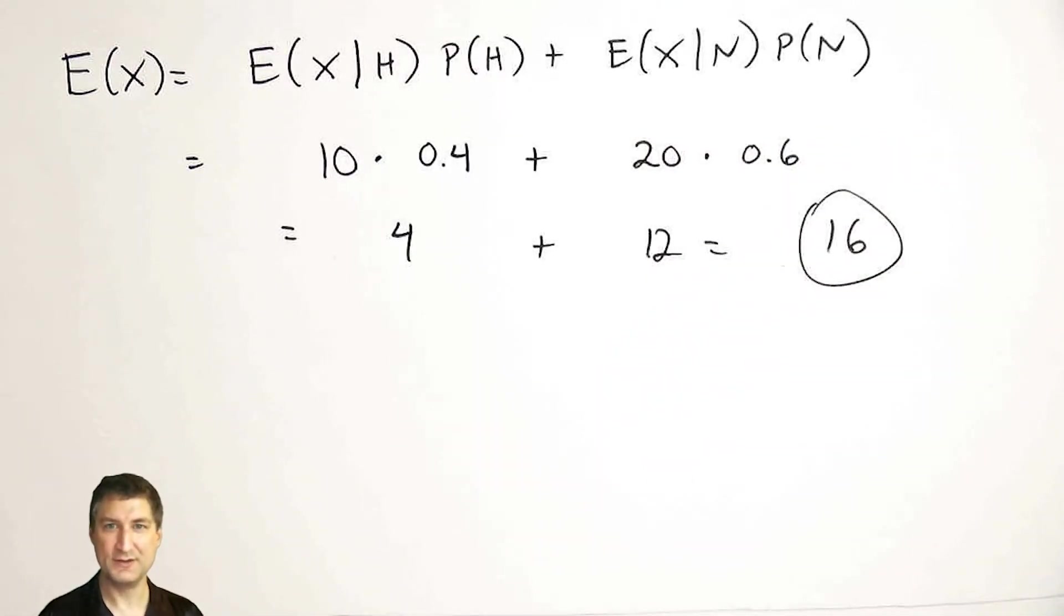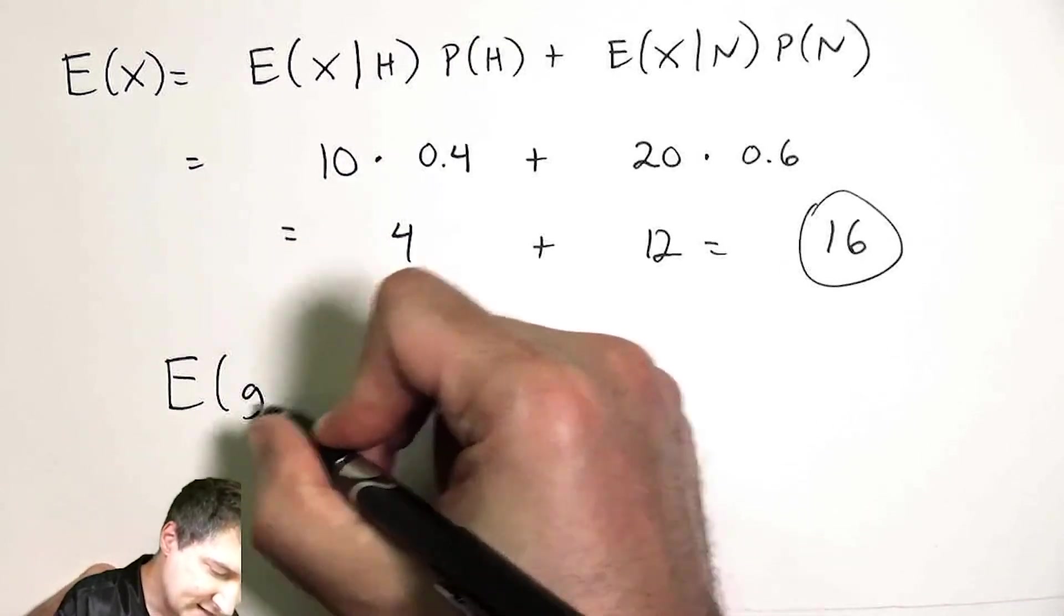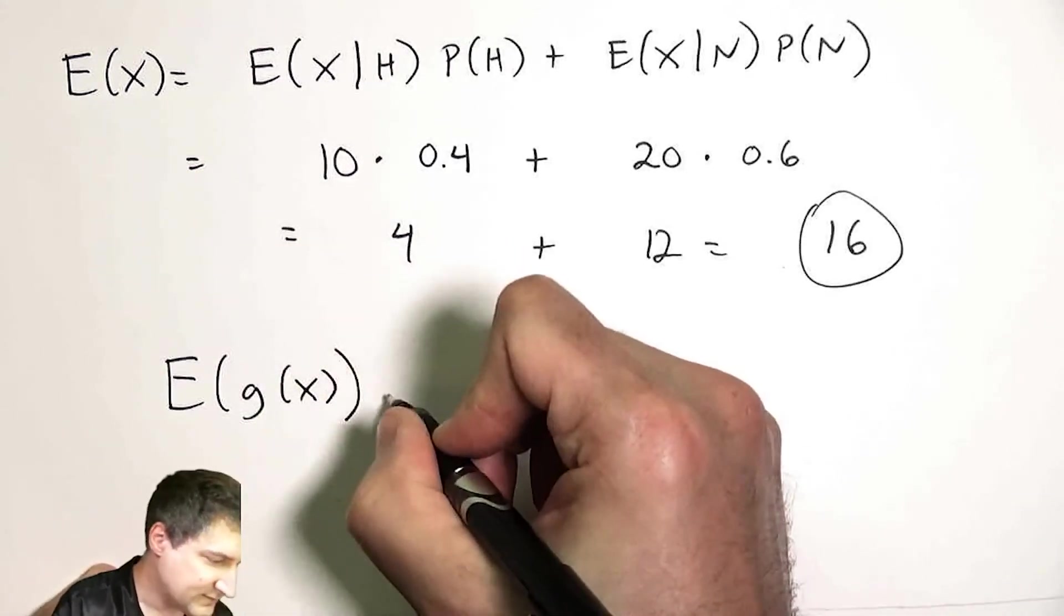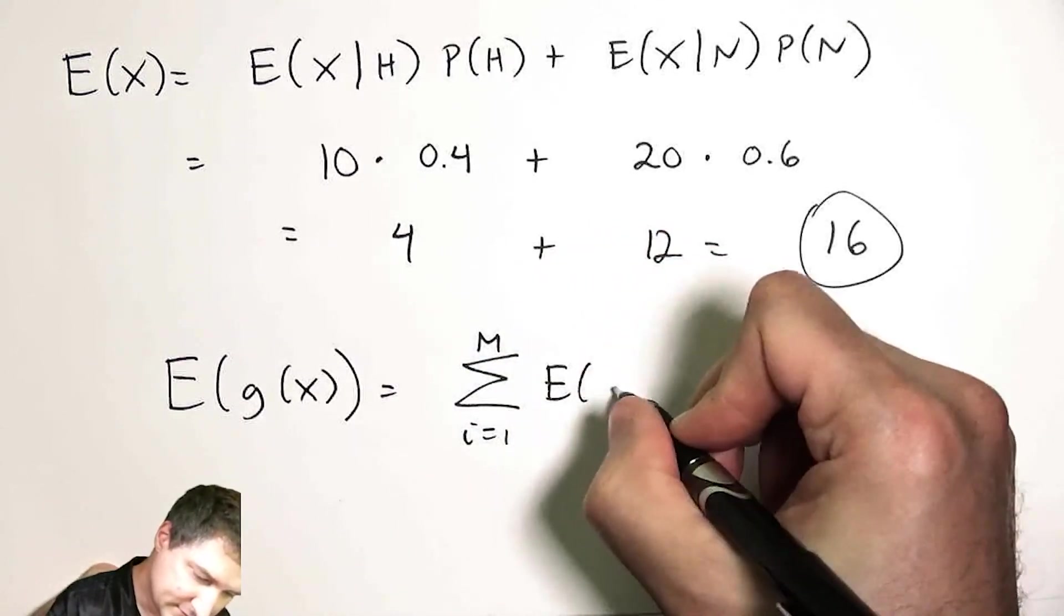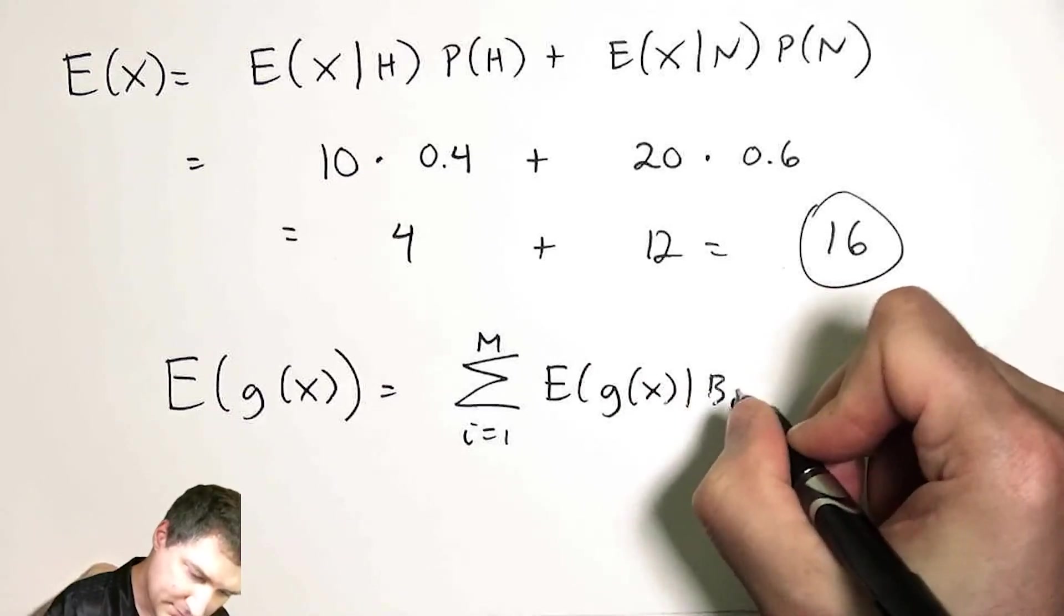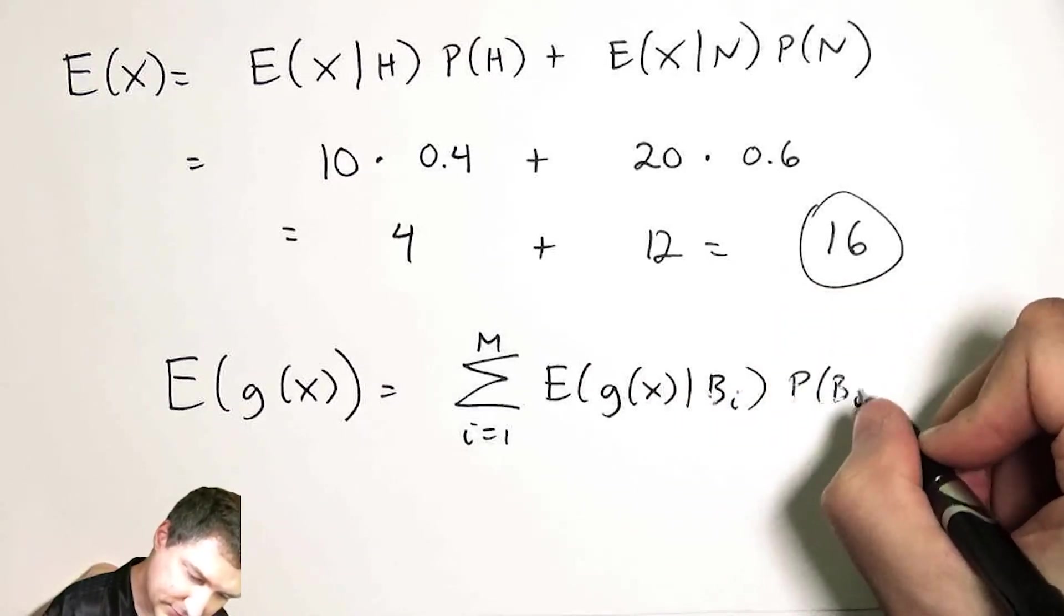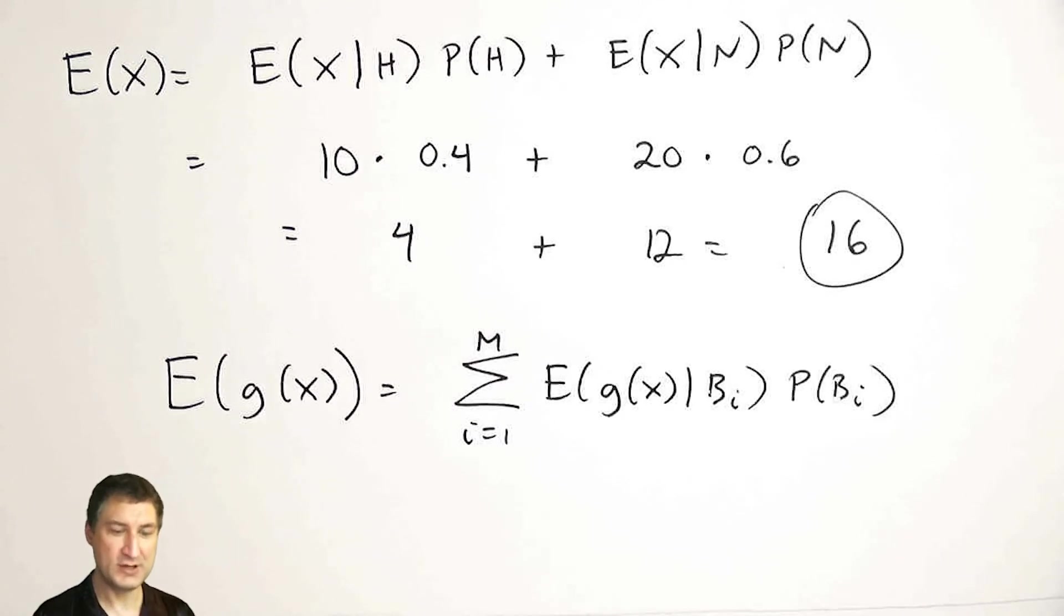So it's very easy for me to compute this expected value by decomposing it into the sum of two smaller expected values that I already know. So that's something that makes life a little bit easier when you've got a partition of the sample space. And in a similar way, the expected value of any function of a random variable is the same kind of partition like this. So if you have a bunch of events, you can kind of break out the expected value of any function if you knew these conditional expected values. And so that makes life a lot easier in a lot of practical situations.